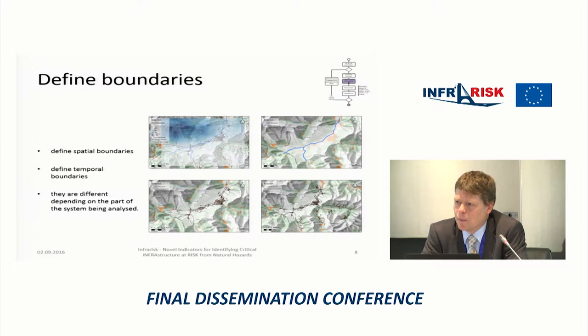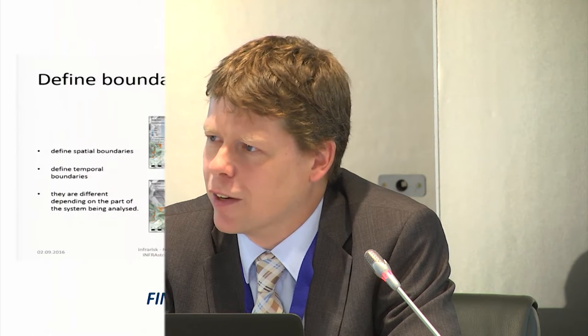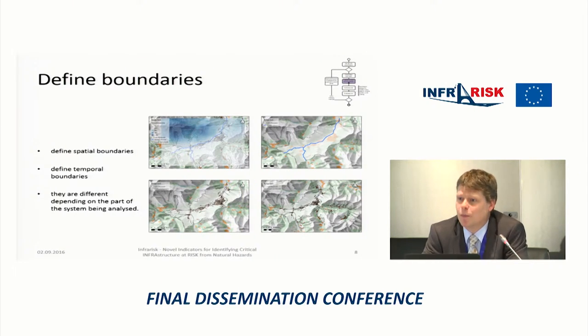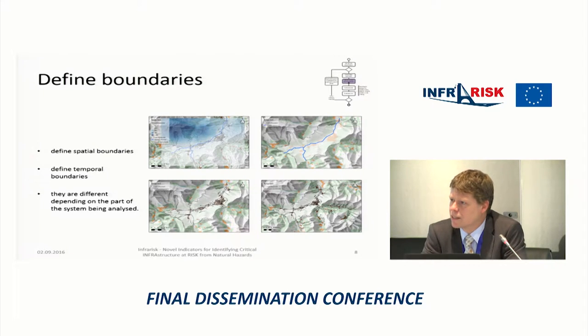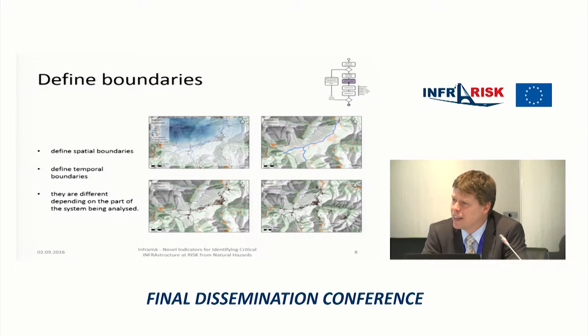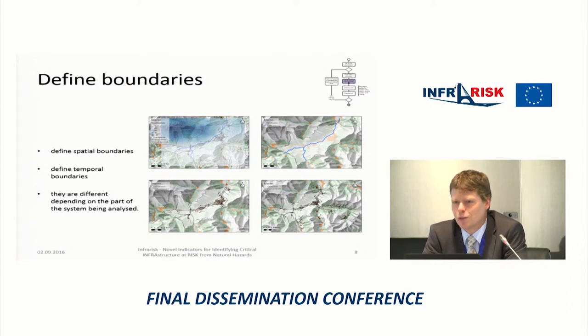The first subtask within system representation is the definition of boundaries. This is more complicated than it seems — the spatial boundaries vary depending on what you're looking at. If you're looking at rainfall in an area you might be interested in a whole catchment area, but it doesn't mean every bit of infrastructure in that catchment is of interest. Temporal boundaries are equally important: rain falls in a certain period, infrastructure behaves and fails over a period, and restoration takes time. The traffic consequences of collapsed bridges in a road network can take two, three, four, five, or six or more years to repair.